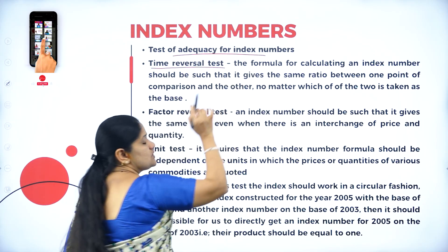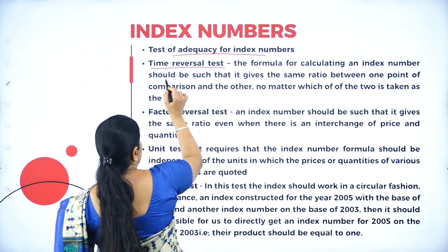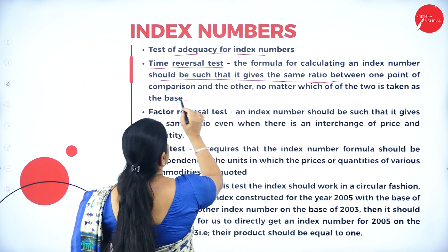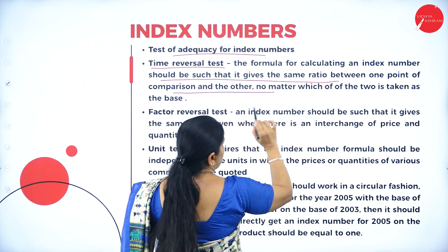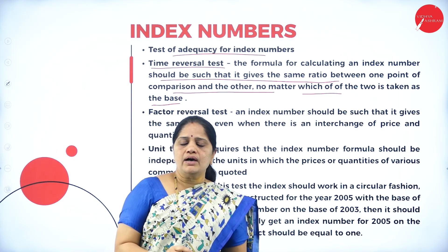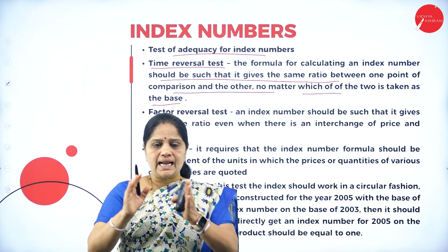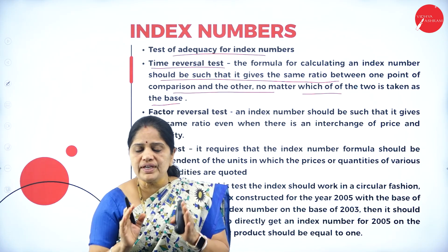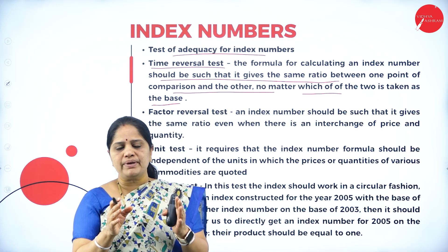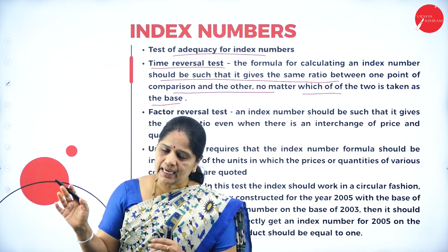The first test is the time reversal test. The formula for calculating an index number should be such that it gives the same ratio between one point of comparison and another, no matter which of the two is taken as the base. In index numbers, we have the base year and the current year, and we calculate the index number based on changes from the base year to the current year.